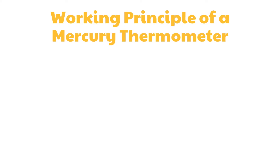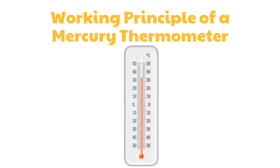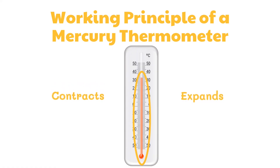We already know that temperature is measured with the use of a thermometer. The mercury column inside the thermometer either rises or drops when placed in contact with any object. The liquid inside the tube expands or contracts in response to a change in temperature. When the thermometer bulb is placed in hot water, the liquid inside the tube expands, takes more space, and goes up the tube. When the bulb is placed in cold water, the liquid contracts and goes down the tube.